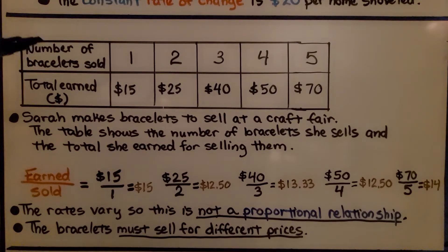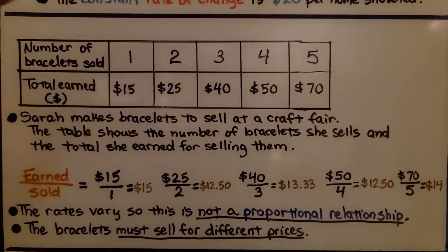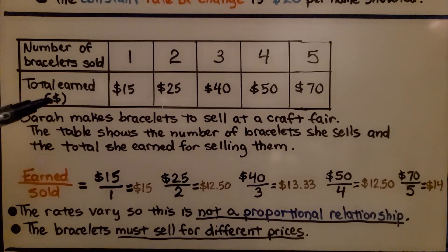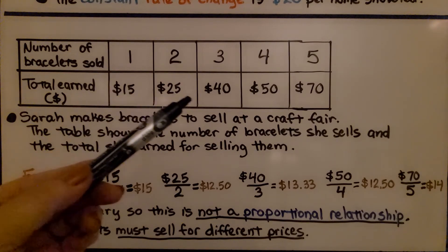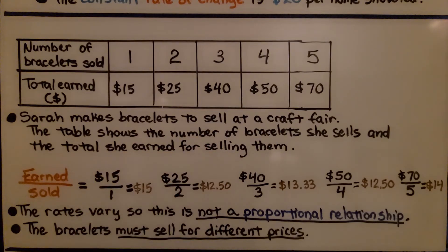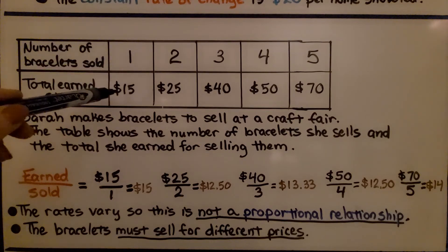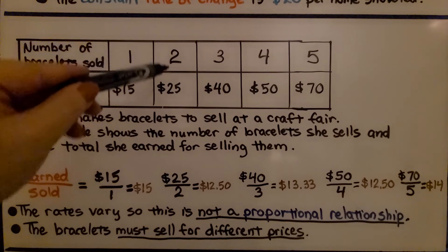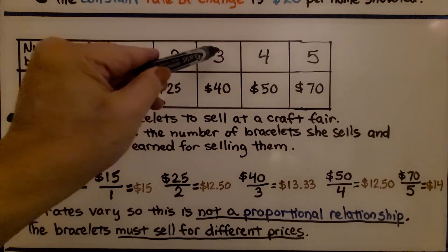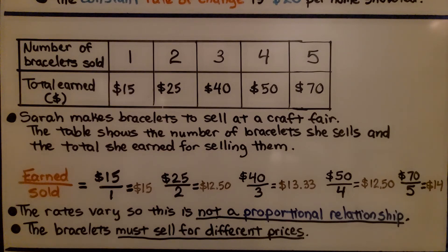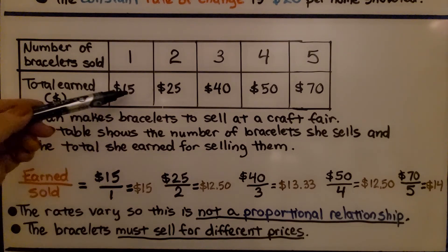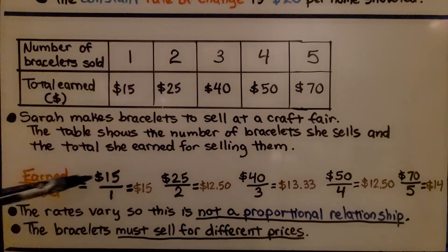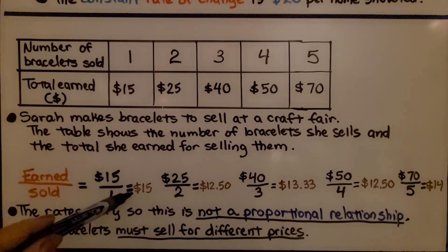Here we have a table: number of bracelets sold (one through five) and total money earned in dollars ($15, $25, $40, $50, $70). Sarah makes bracelets to sell at a craft fair. When she sold one bracelet she had $15; two bracelets, $25; three bracelets, $40. If we do $15 divided by 1, that's $15.